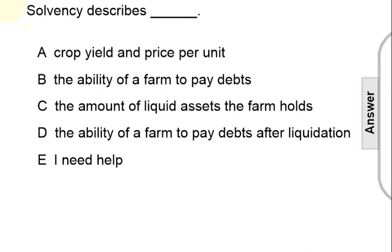Solvency describes: A. Crop yield and price per unit. B. The ability of a farm to pay debts. C. The amount of liquid assets the farm holds. Or D. The ability of a farm to pay debts after liquidation.